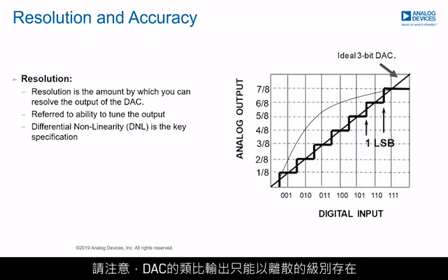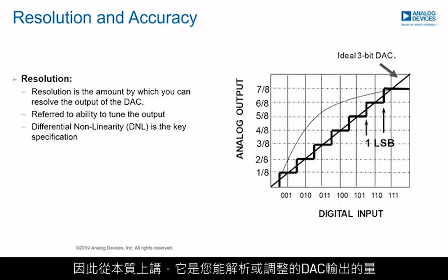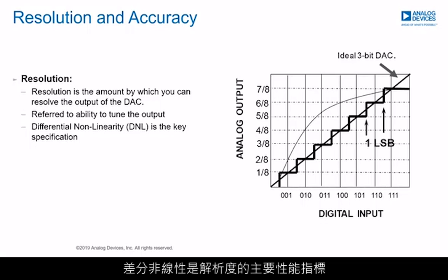The analog output of a DAC can only exist at discrete levels. Resolution represents the number of these discrete levels or steps — essentially, the amount by which you can resolve or tune the output of a DAC. Differential nonlinearity (DNL) is the key specification for resolution.